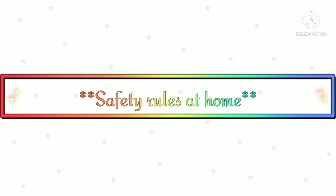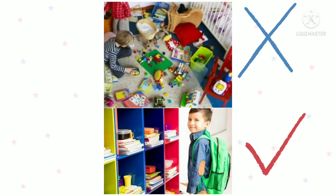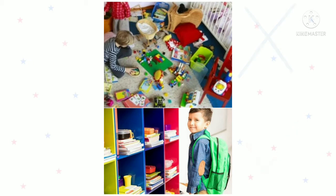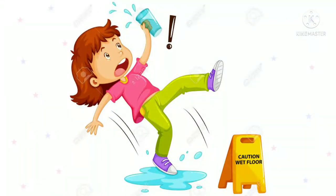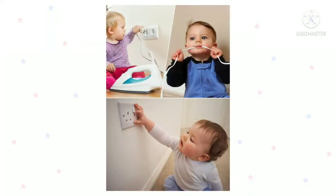Now let us learn some safety rules to follow at home. First, keep your things — toys, bags, books, etc. — at their proper places; you or someone can trip over them and get hurt. Do not keep the floor wet — you or someone may slip on the wet floor. Do not touch any electric appliance with wet hands as you may get an electric shock. Examples: electric wires, switches, and iron box.